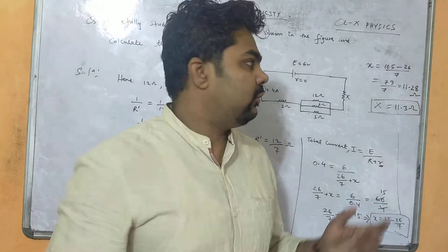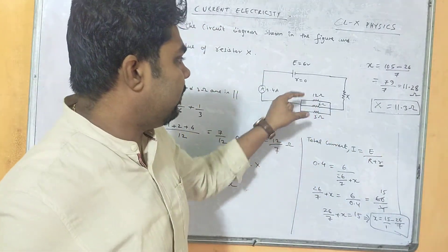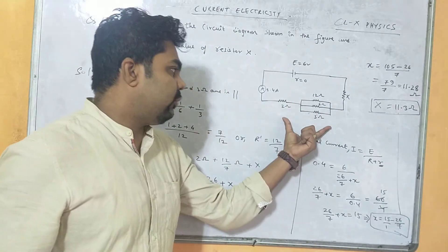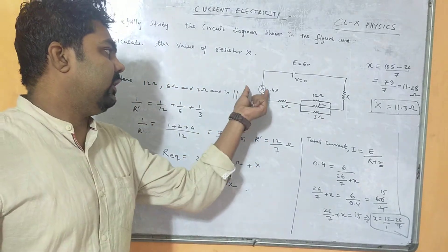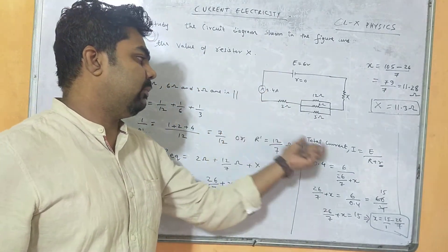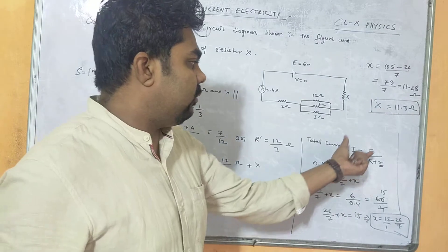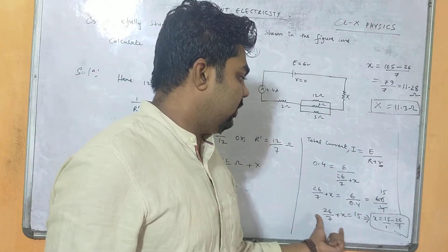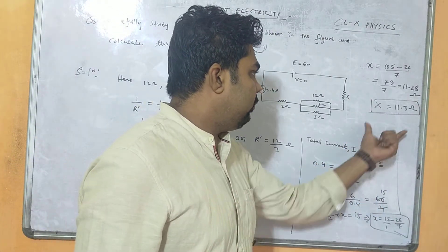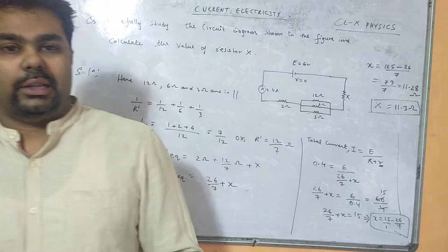In any network, we first find the equivalent resistance, then calculate the total resistance. If current is given, we apply the formula: current equals total EMF divided by total resistance. After substitution, we get the value of the unknown resistance.